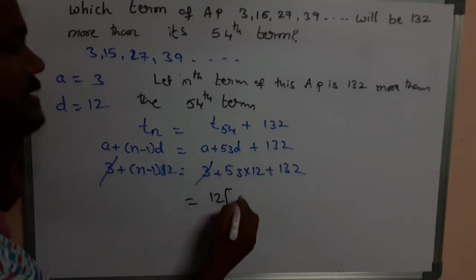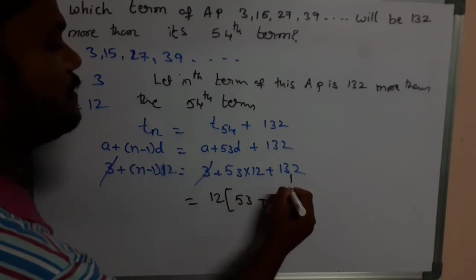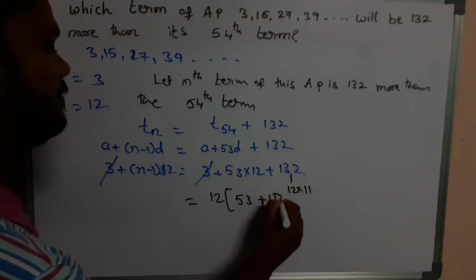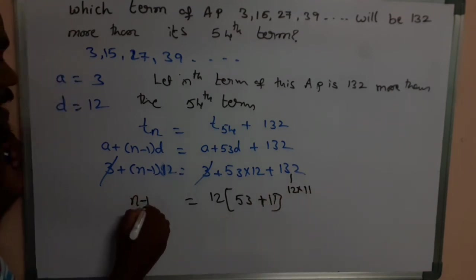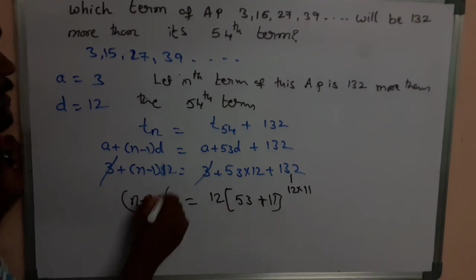This 132 can be written as 12 into 11. On taking 12 as a common, 11 is left. So (n minus 1) into 12 is equal to 12 of (53 plus 11). So 12 and 12 get cancelled.